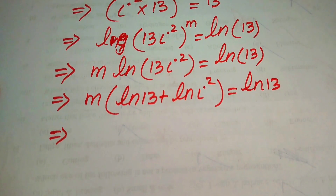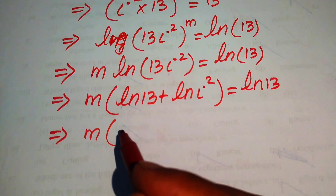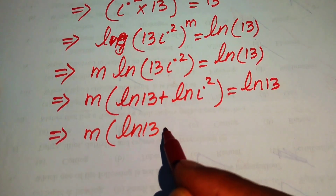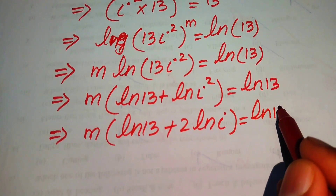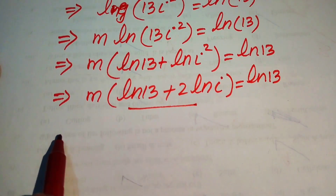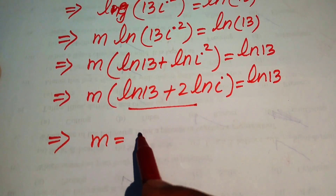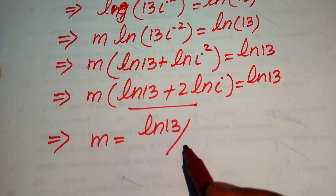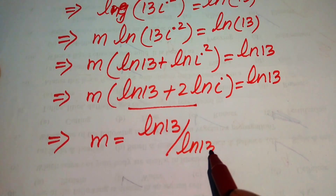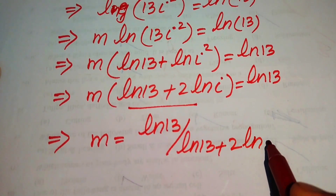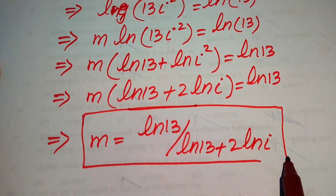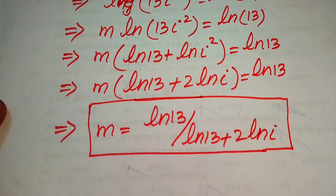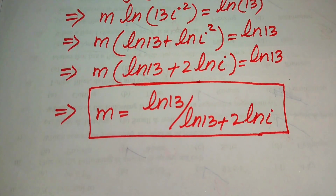Moving all terms to the right-hand side, we get m = log(13) / [log(13) + 2·log(i)]. This is the final value of m from Method 2. Thank you so much for watching this video — please subscribe to my channel for more exciting videos.